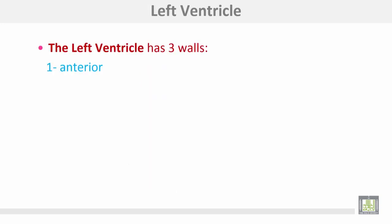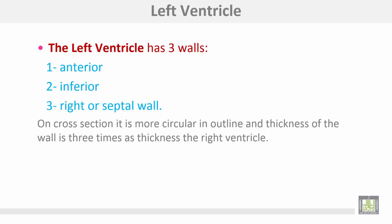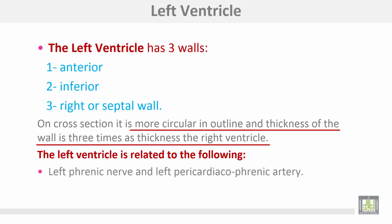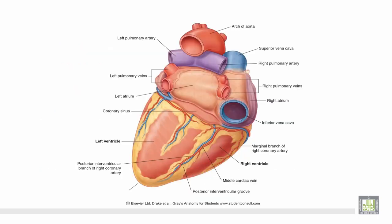The left ventricle also has three walls: anterior, inferior, and right or septal wall. On cross section, the left ventricle is more circular in outline and the thickness of its wall is three times the thickness of the right ventricle. The left ventricle is related to the left phrenic nerve and left pericardiacophrenic artery, and it forms most of the diaphragmatic surface of the heart.